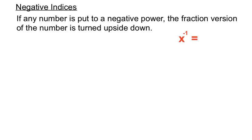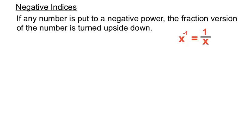We've got x to the minus 1. Now it's got a negative power there, a minus 1. Now remember x, or any whole number for that matter, can be written as x over 1 — that's the fraction version of x. So if we want to write x to the minus 1 without a negative power, the fraction version of x gets turned upside down. So x to the minus 1 ends up being 1 over x.